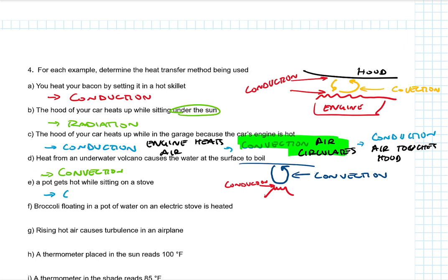Pot gets hot while sitting on a stove. This is conduction. Those things are in contact. Broccoli floating in a pot of water on an electric stove is heated. So here is convection. So the water carries heat from the stove to the broccoli. Right, so the water getting hot from the stove is conduction, but the water taking the heat to the top is convection, and then the broccoli getting hot is conduction because it's touching the water. But because the water is the thing carrying the energy, we're going to say it's convection.